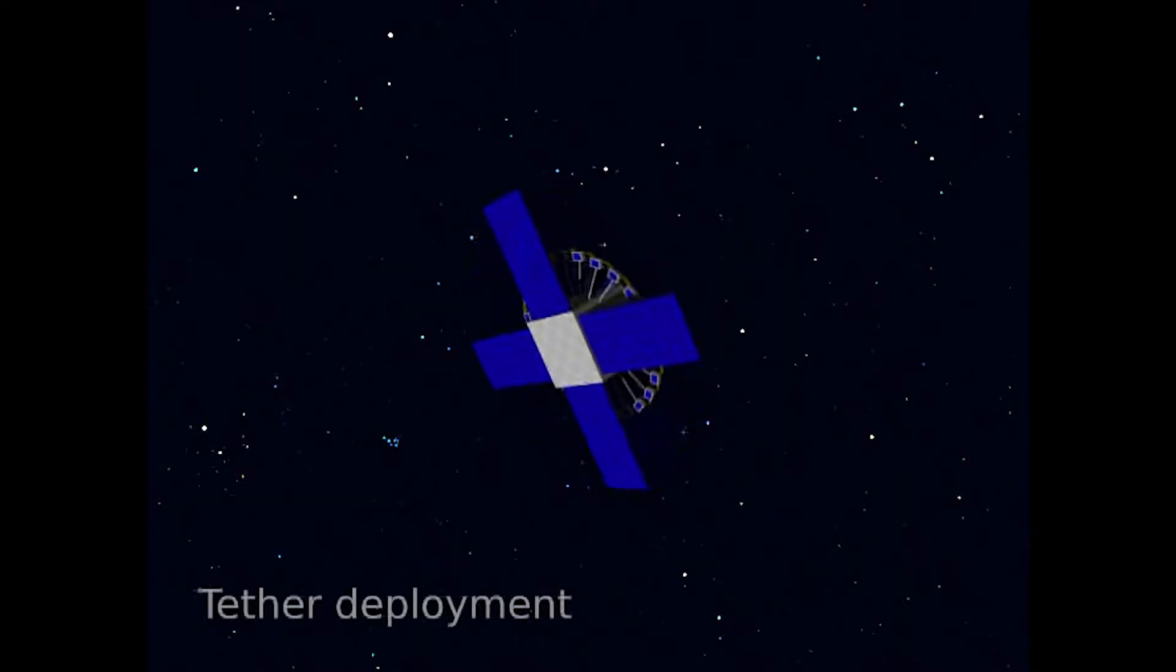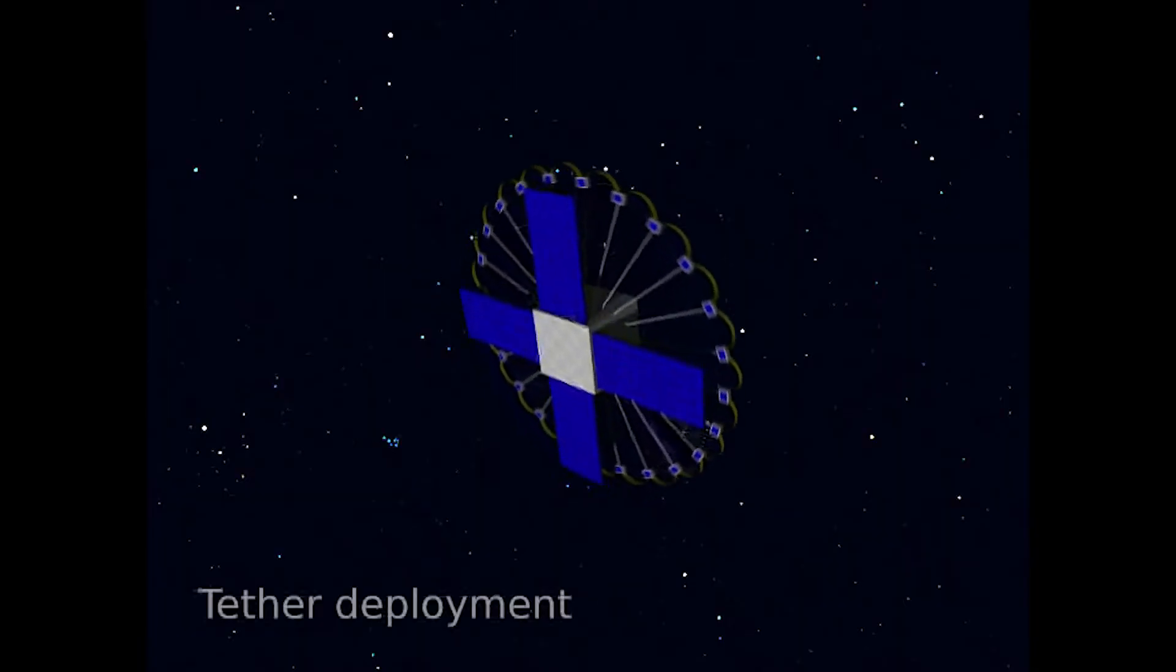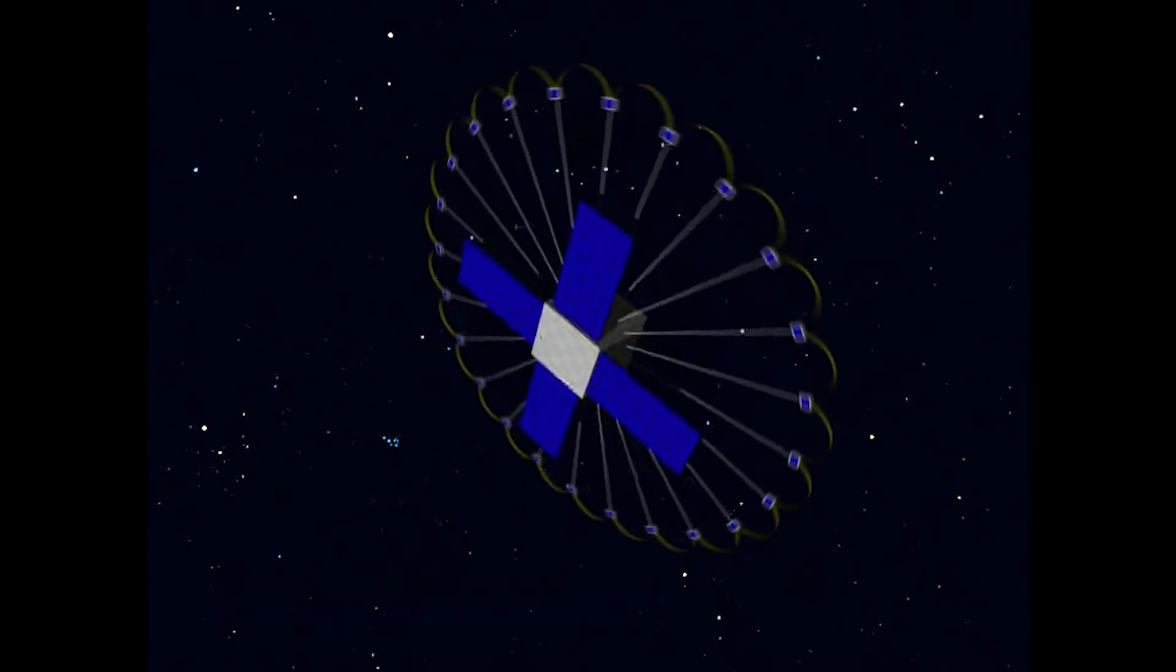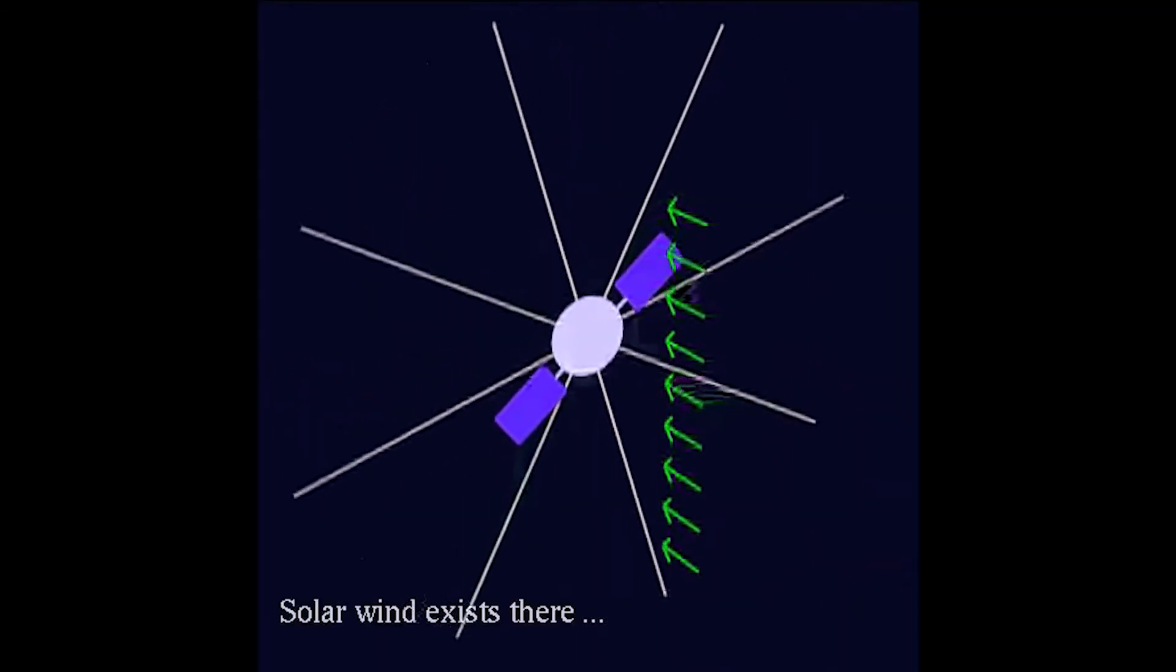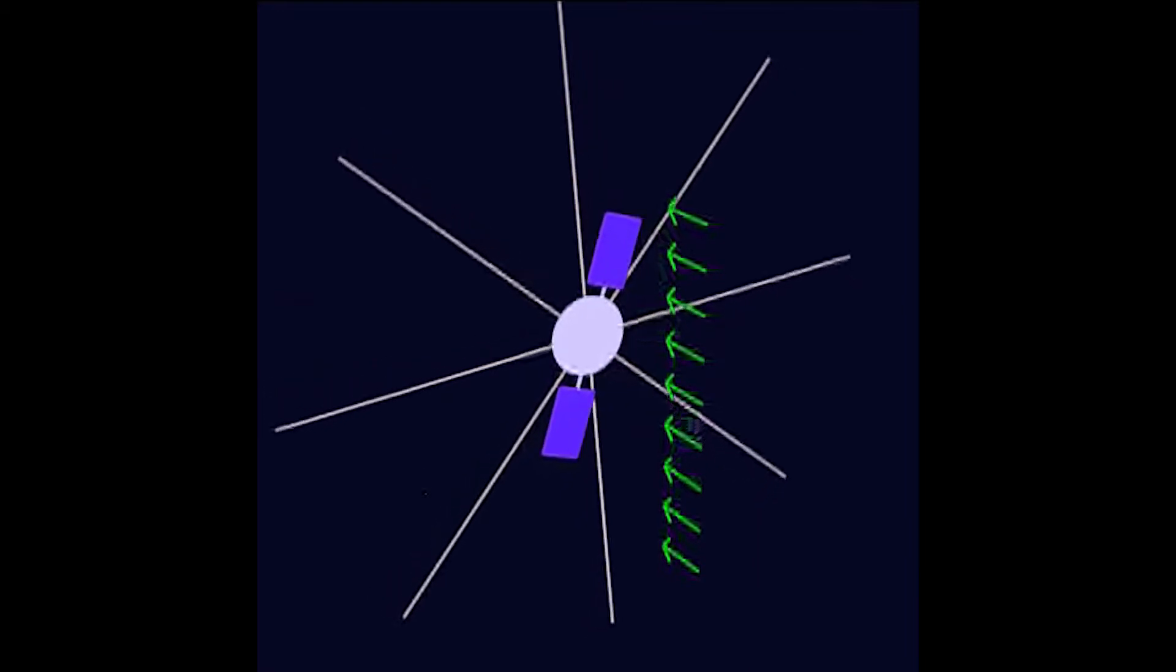However, a Finnish scientist, Pekka Janhonen, discovered in 2006 that if you put a charged wire, charged tether, a thin charged tether in the solar wind, you get the actual push on the wire, you get acceleration, you don't need to burn any fuel.